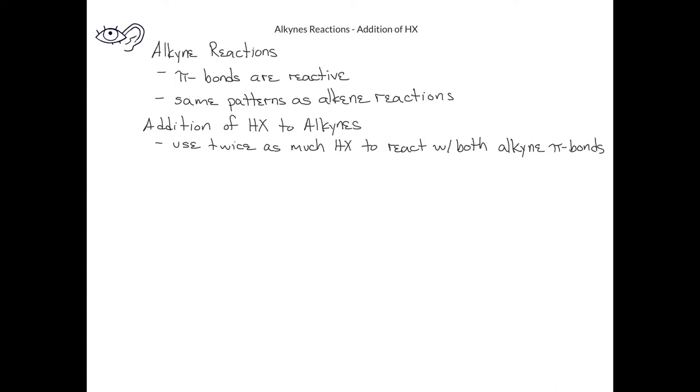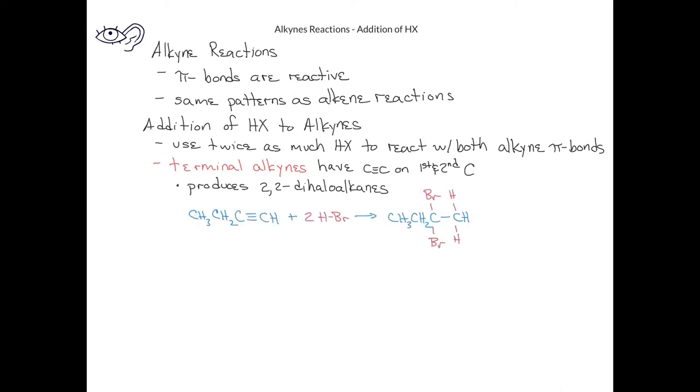If the alkyne we start with is a terminal alkyne, or one in which the carbon-carbon triple bond is between the first and second carbons, we end up with two halogen atoms added to the second carbon in the chain. This is called a 2,2-dihalo alkane.